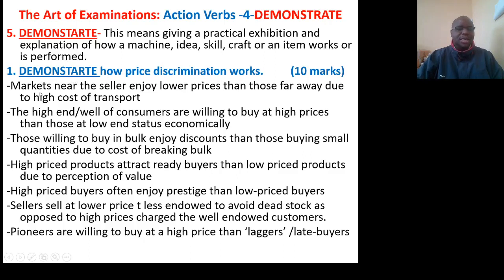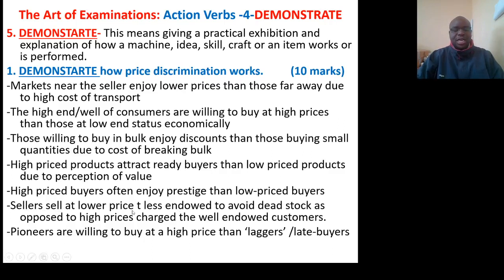Question: Demonstrate how price discrimination works. Markets near the seller enjoy lower prices than those far away, due to the high cost of transport. High-end or well-off consumers are willing to buy at high prices compared to those of low economic status. Those willing to buy in bulk enjoy discounts compared to those buying small quantities, due to the cost of breaking bulk. High-priced products attract early buyers compared to low-priced products, due to perception of value. High-priced buyers often enjoy prestige compared to low-priced buyers. Sellers sell at lower prices to less-endowed customers to avoid dead stock, as opposed to the high prices charged to well-endowed customers.